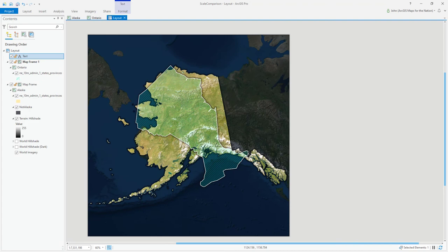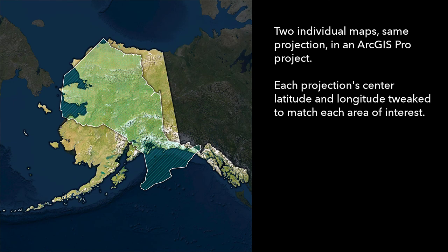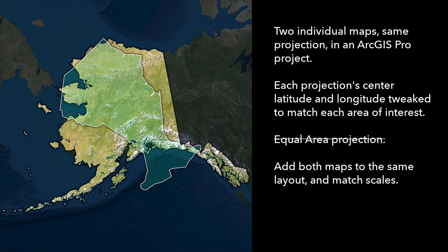And here it is dressed up a little bit with some blend modes and hill shade. So we have two maps, and those maps have to be in the same projected coordinate system, centered at the center point of your area of interest. I centered the projection over Alaska and then over Ontario, and it's that trick that means we don't necessarily have to use an equal area projection, because the distortion will be the same around the periphery of each map. In a new layout, you overlay those two map frames and set their scales to be exactly the same. That's how you make A-to-B scale comparison maps in ArcGIS Pro.